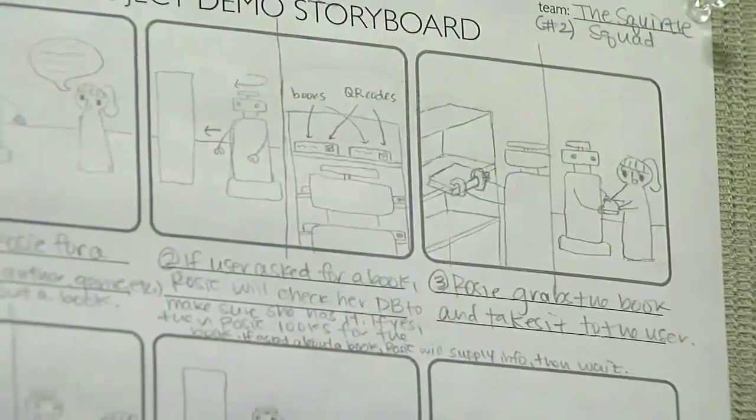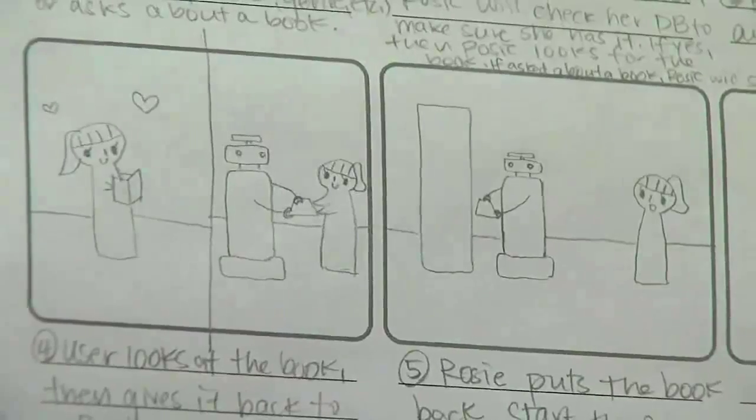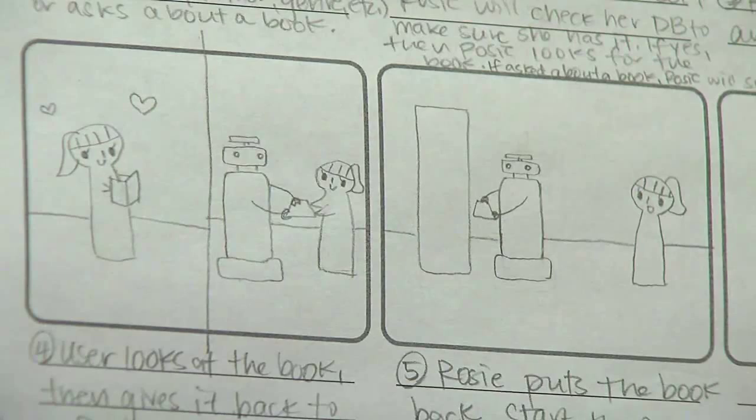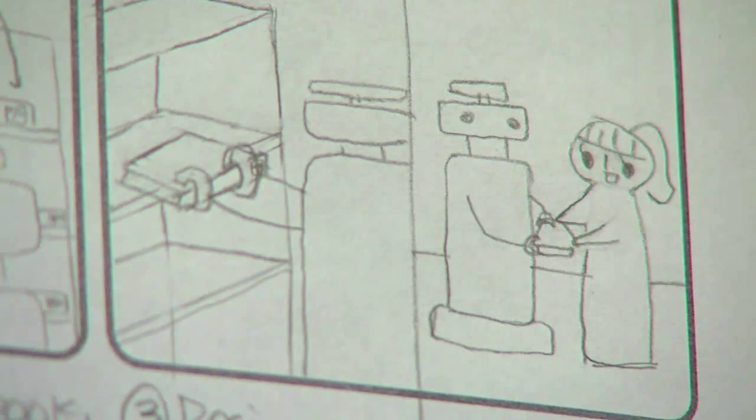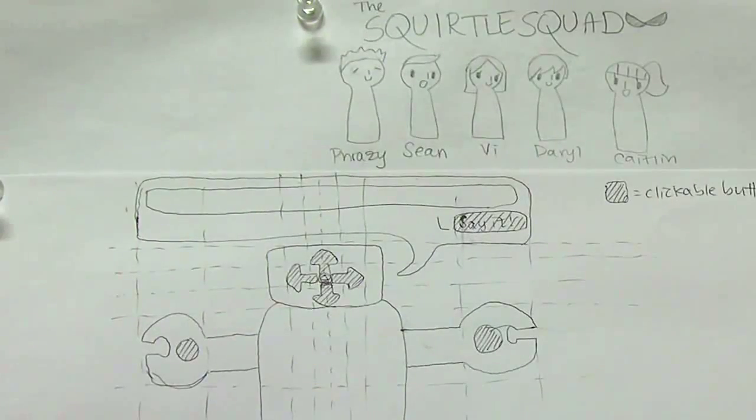Part of the process was to storyboard what the final demonstration was going to be. So basically, students think through the scenarios of how someone would interact with the robot, what the robot would do as part of a demonstration of the system.